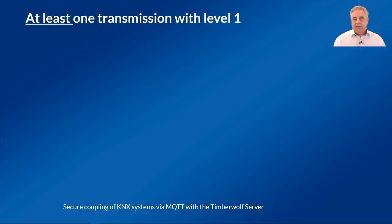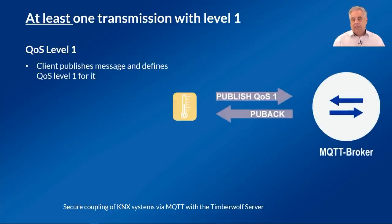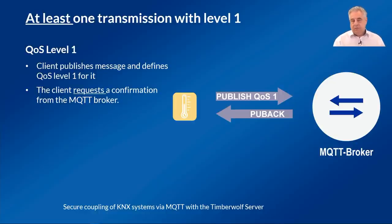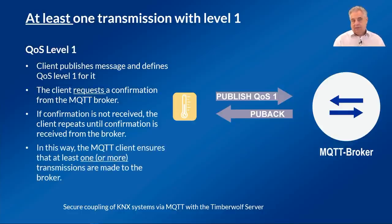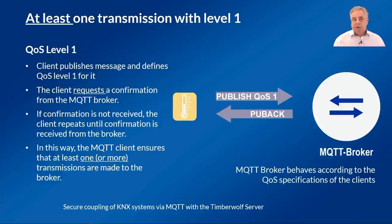QoS level 1 guarantees that the message has reached the MQTT broker at least once. The client publishes a message marked with QoS level 1, requesting confirmation from the broker that the message has arrived and is being processed. In the absence of an acknowledgement, the client repeats the message until one is received. Due to the repetitions, it is possible that the MQTT broker receives the message several times and forwards it several times. For scenarios whose application logic can handle multiple transmissions of the same message, this level is optimal as it includes a minimum guarantee with moderate effort. The MQTT broker passes the QoS setting on to all subscribing clients when forwarding the message.